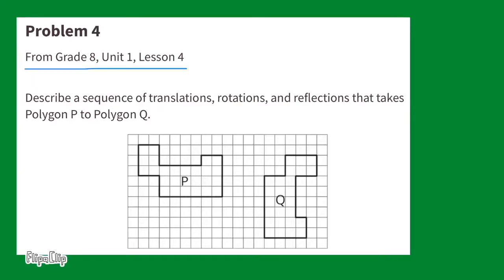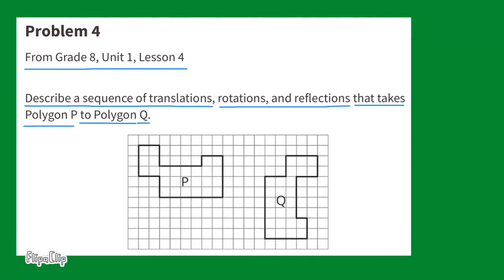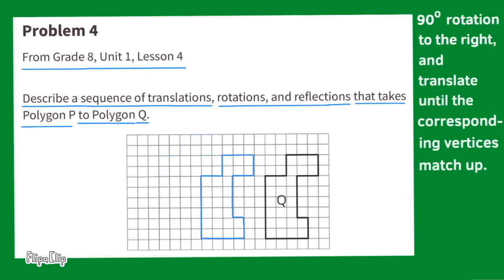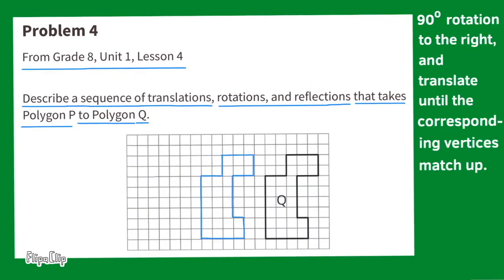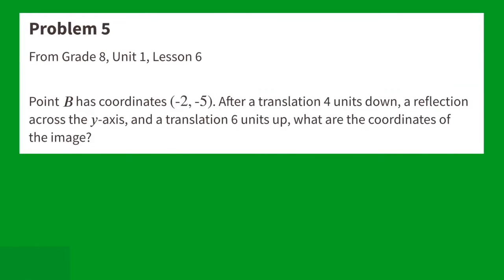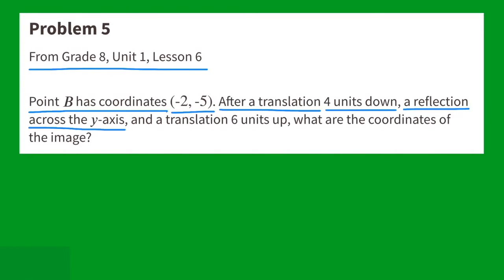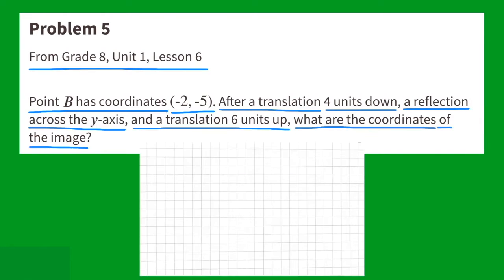Problem number 4 from 8th grade Unit 1 Lesson 4: Describe a sequence of translations, rotations, and reflections that takes polygon P to polygon Q. A 90 degree rotation to the right, and translate until the corresponding vertices match up. Problem number 5 from 8th grade Unit 1 Lesson 6: Point B has coordinates negative 2 and negative 5. After a translation 4 units down, a reflection across the y-axis, and a translation 6 units up, what are the coordinates of the image? I used graph paper to track all these moves.